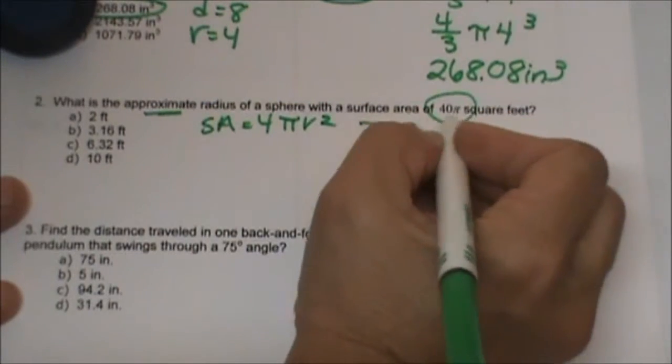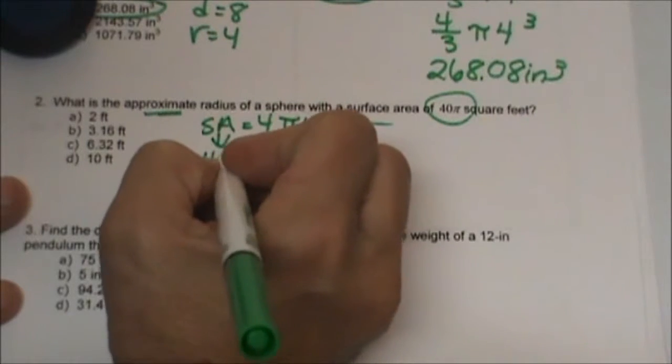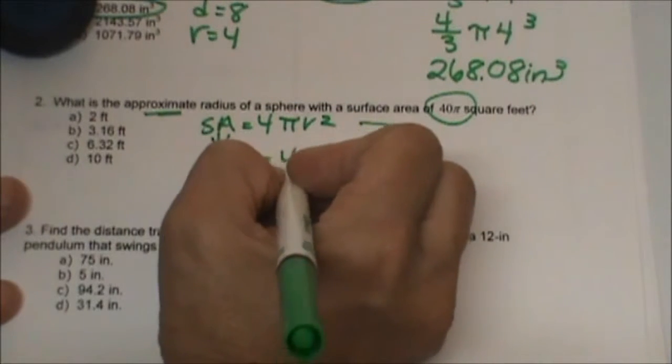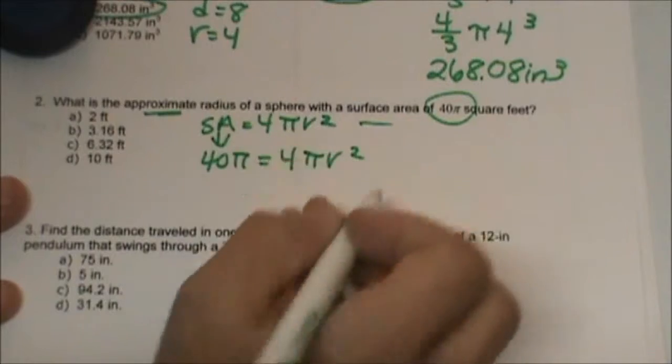We know the surface area is 40. So for surface area I am going to plug in 40π. Let's plug that in and start solving.